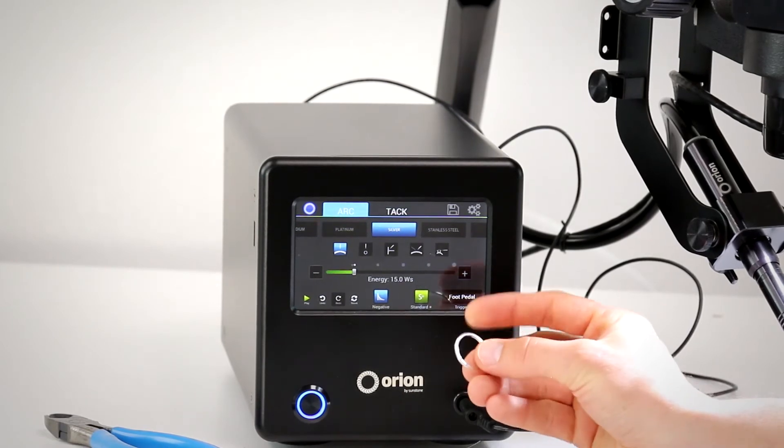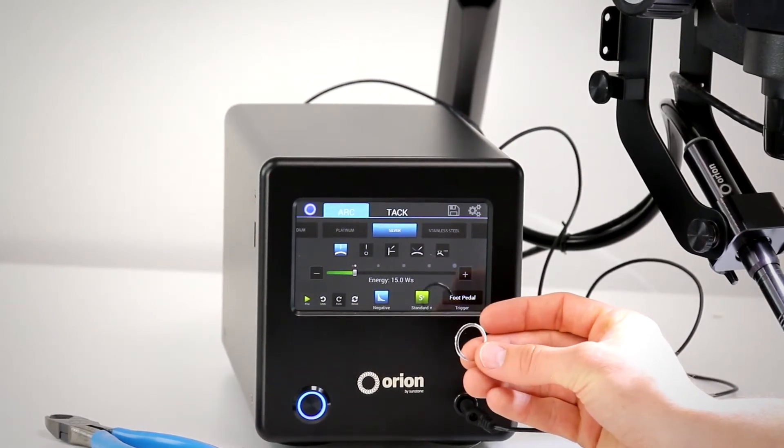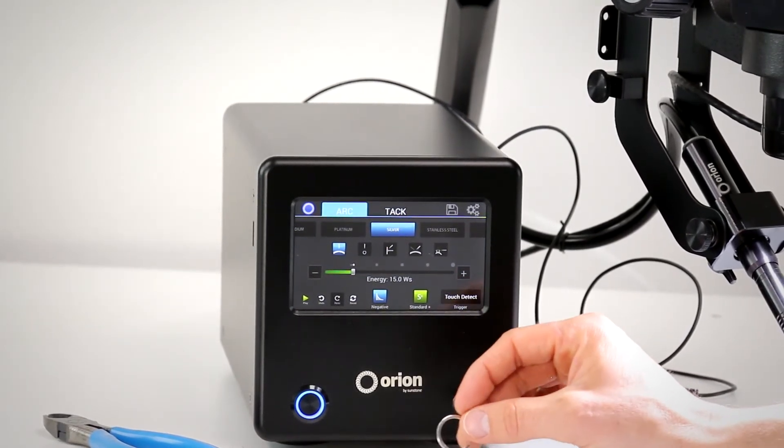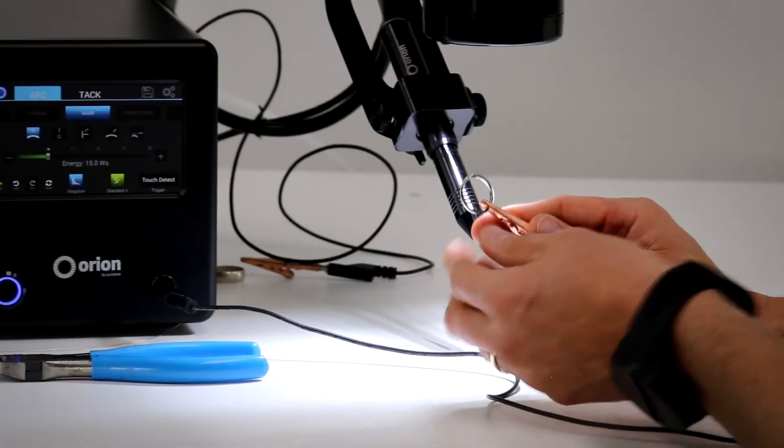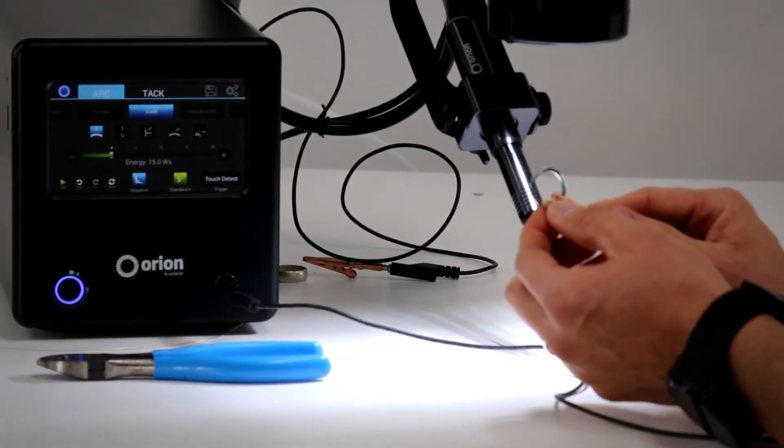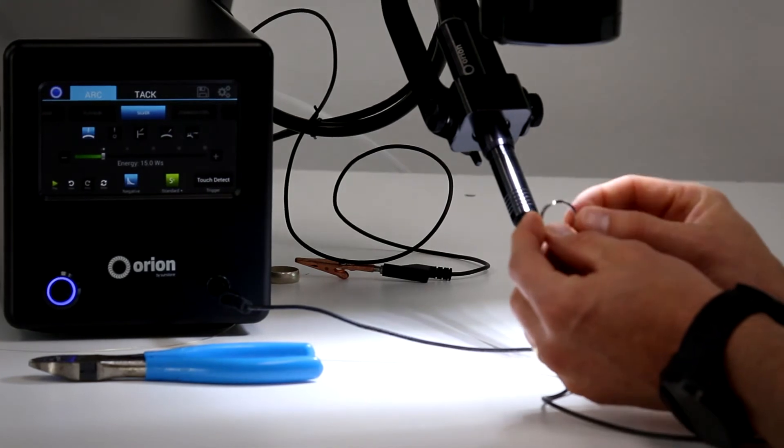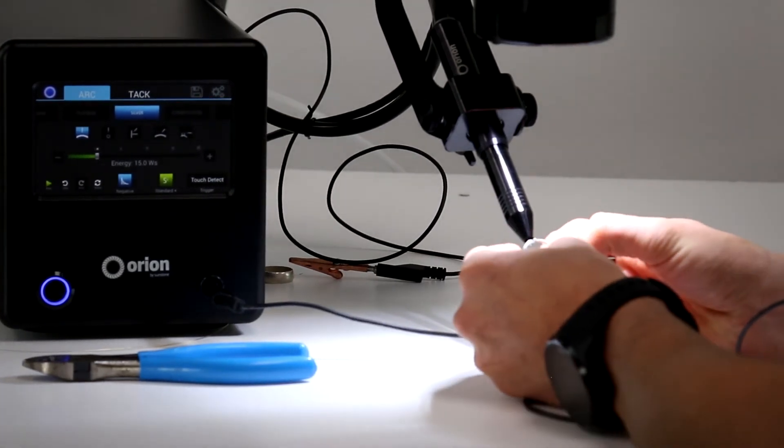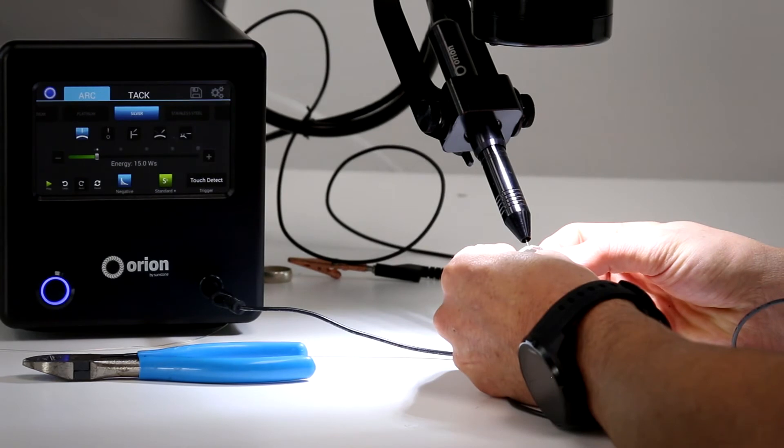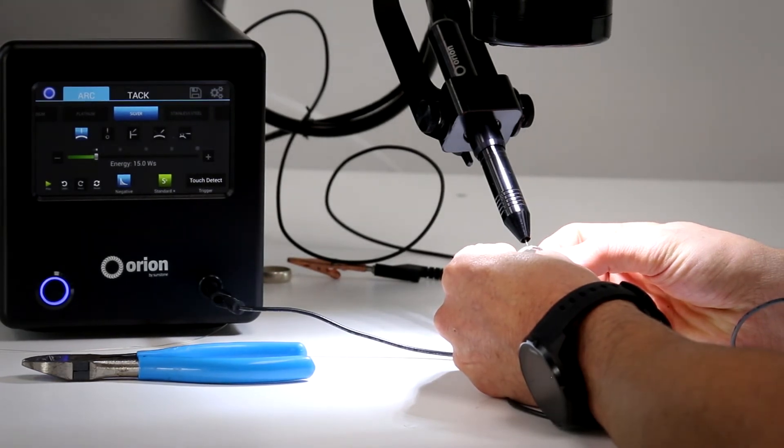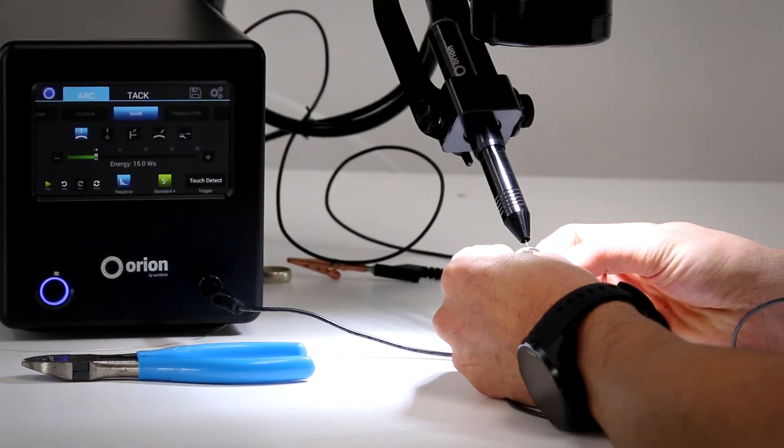When you touch this to the electrode, nothing will happen until you step on the foot pedal. So come back over here and we're going to do a weld now. I'm going to clip the alligator clip here onto my metal, push the pieces together, look through the microscope, and then all I have to do is touch the metal to this electrode and it will weld.